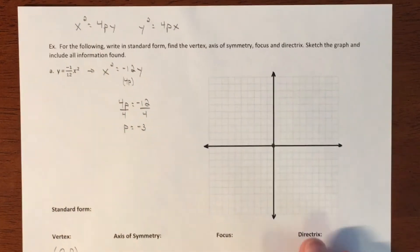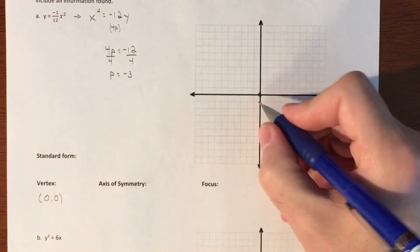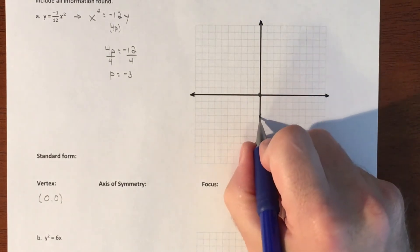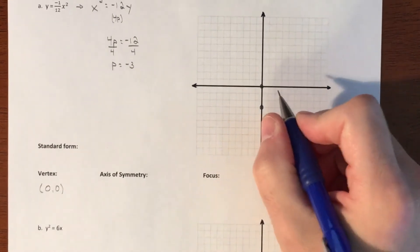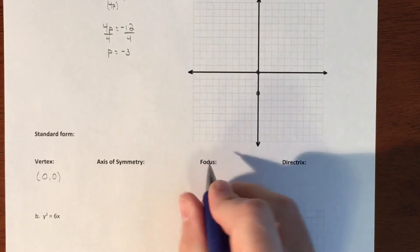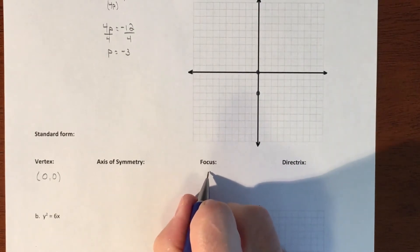So that tells me the direction that I'm going. So for my parabola, I'm going to go down 3. And that is going to be my focal point. So my focus is going to be (0, -3).